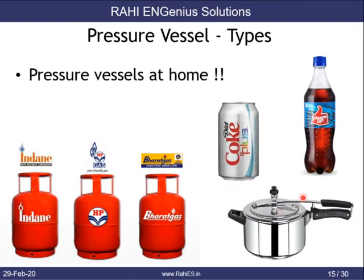We can see many pressure vessels at home — gas cylinders, cook bottles, and the simplest version: a pressure cooker. A pressure cooker most resembles an industrial pressure vessel used in a refinery. It has a pressure relief valve, a safety valve, an access opening, and a main pressure-containing body.